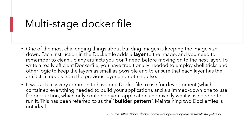So what is this multi-stage Docker file all about? One of the most challenging things about building images is keeping the image size down. In our last video we created an ASP.NET Core image that was actually a huge size — we didn't even notice it. The reason being it actually contained the whole SDK inside it. Each instruction in the Docker file adds a layer to the image, so it's important to clean up artifacts you don't really need. The Docker file we created had a full-blown SDK inside it, which is not the right way of doing it.